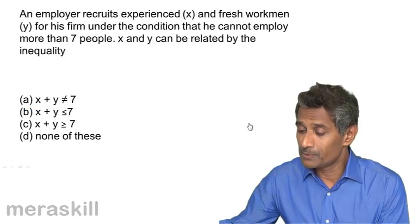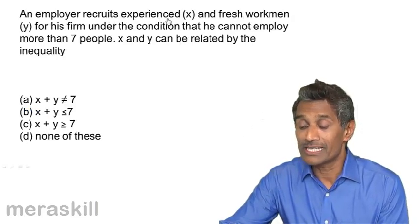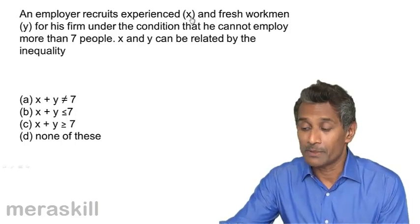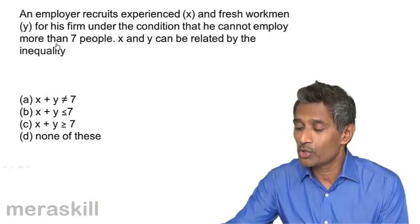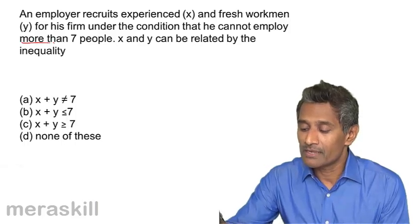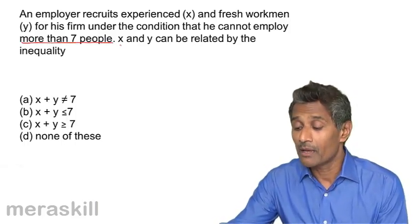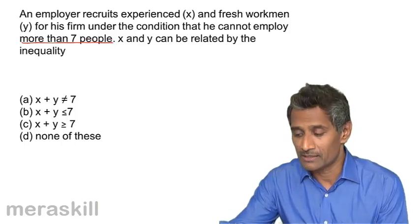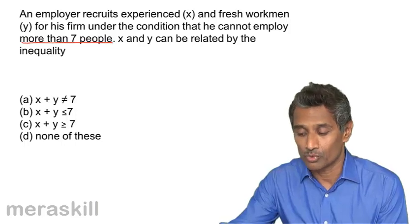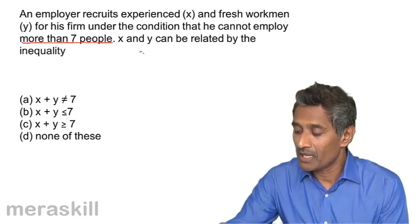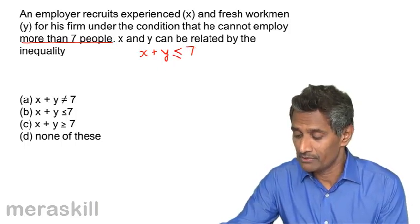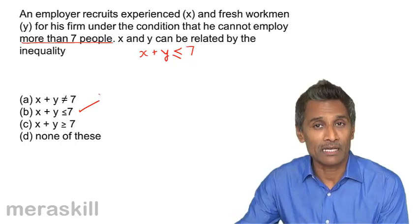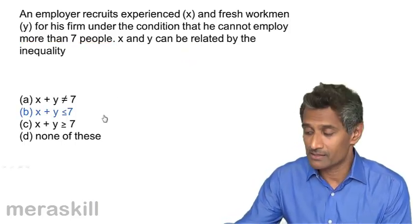Moving to the next example: an employer recruits experienced and fresh workmen — experienced workmen numbered x and fresh workmen y — under the condition that he cannot employ more than seven people. More than seven people translates to a maximum, or at most seven. So x plus y is either seven or less than seven; it cannot be more than seven. So x plus y is less than or equal to 7, and that is the answer.